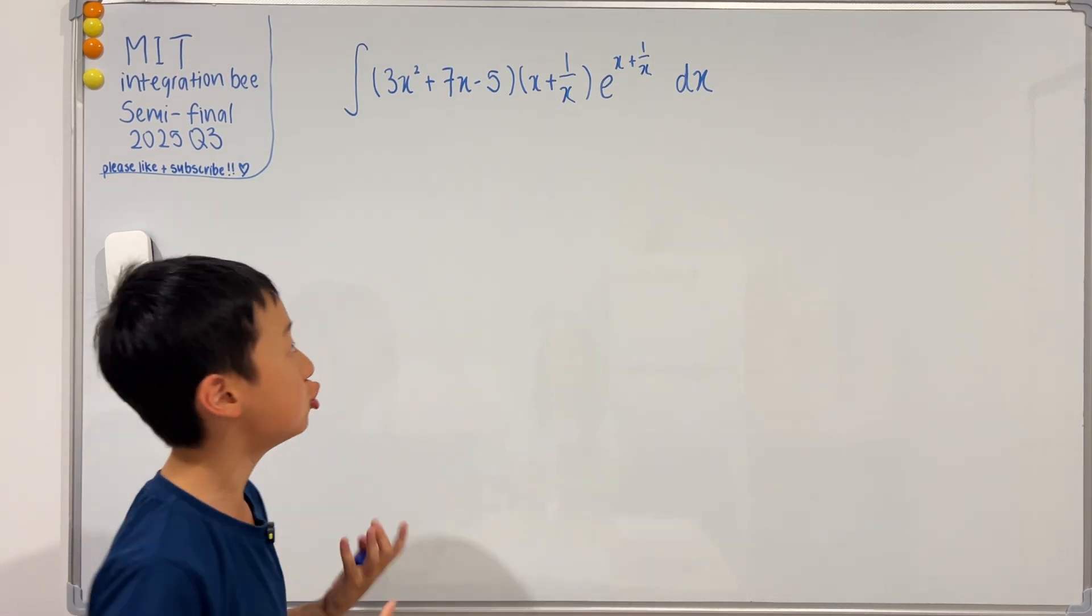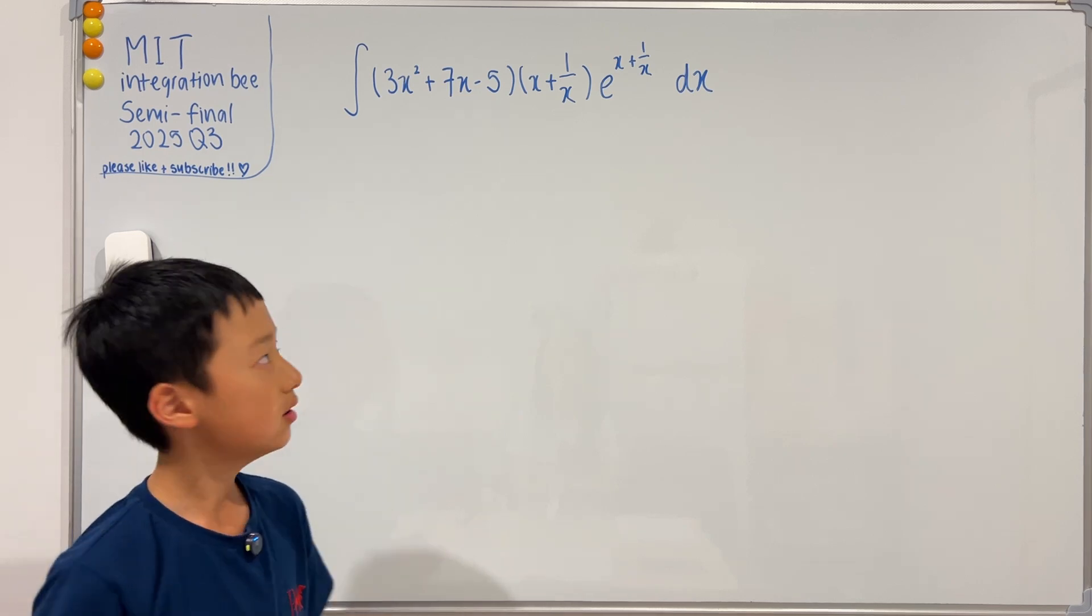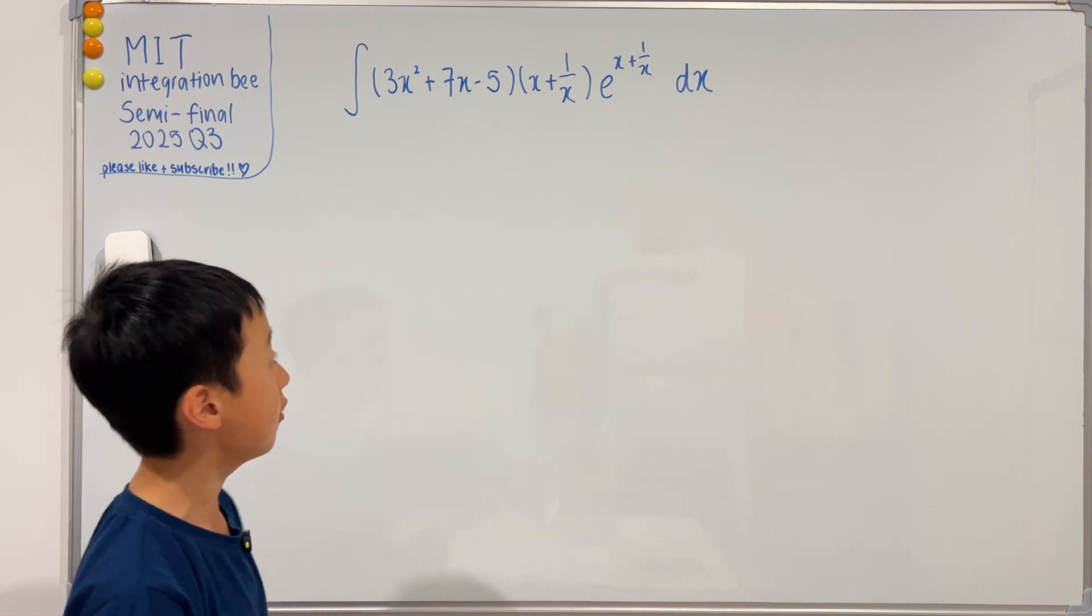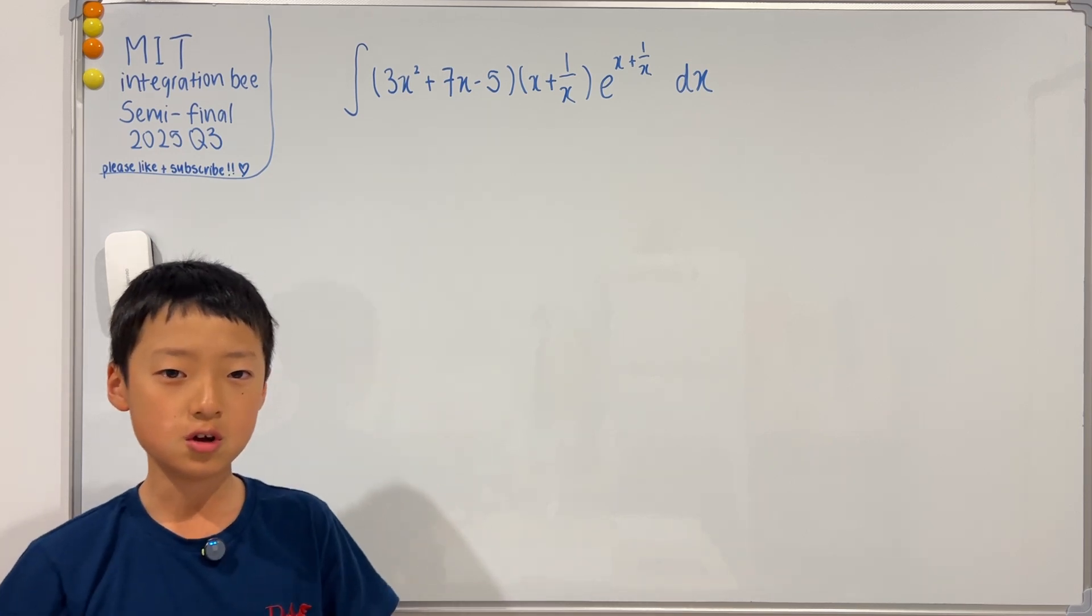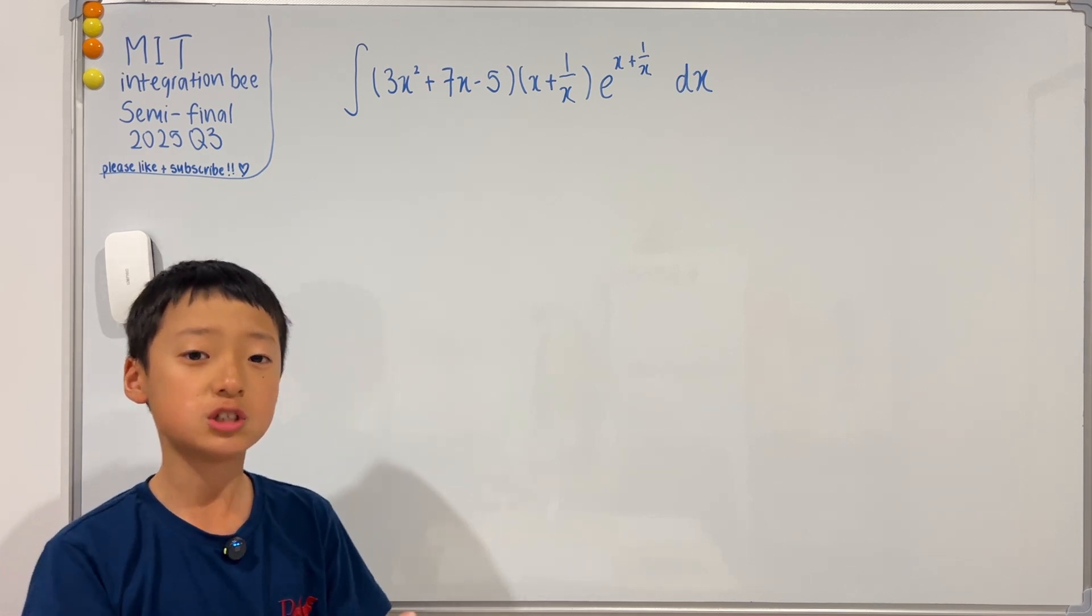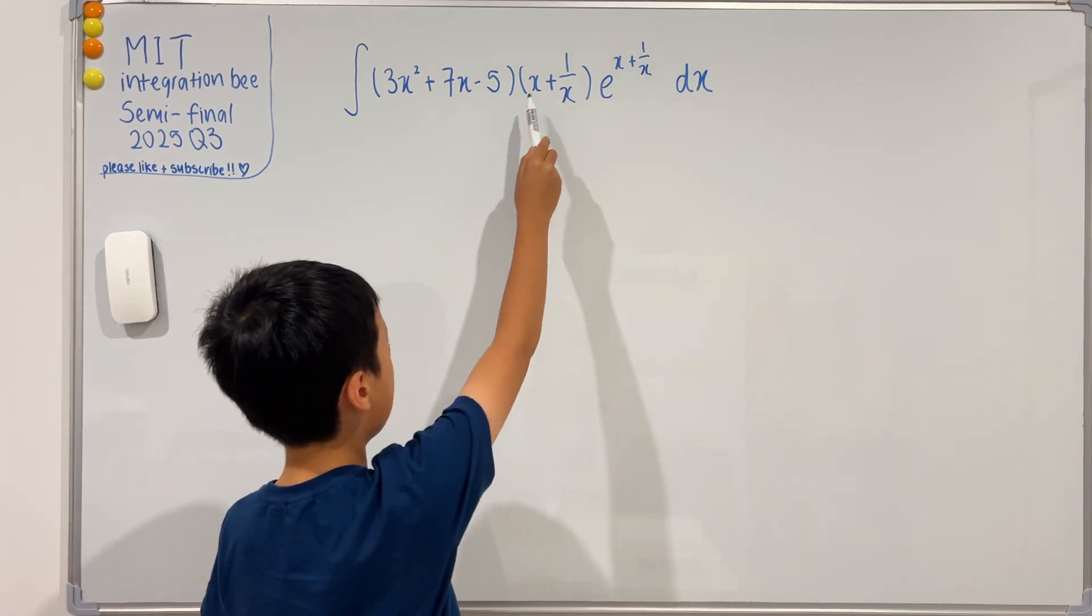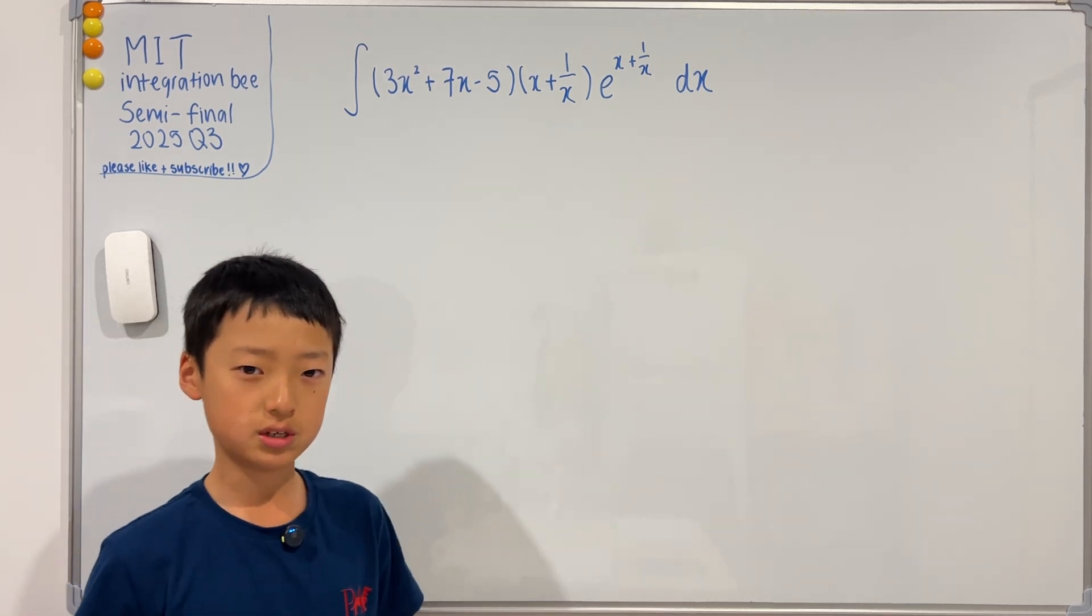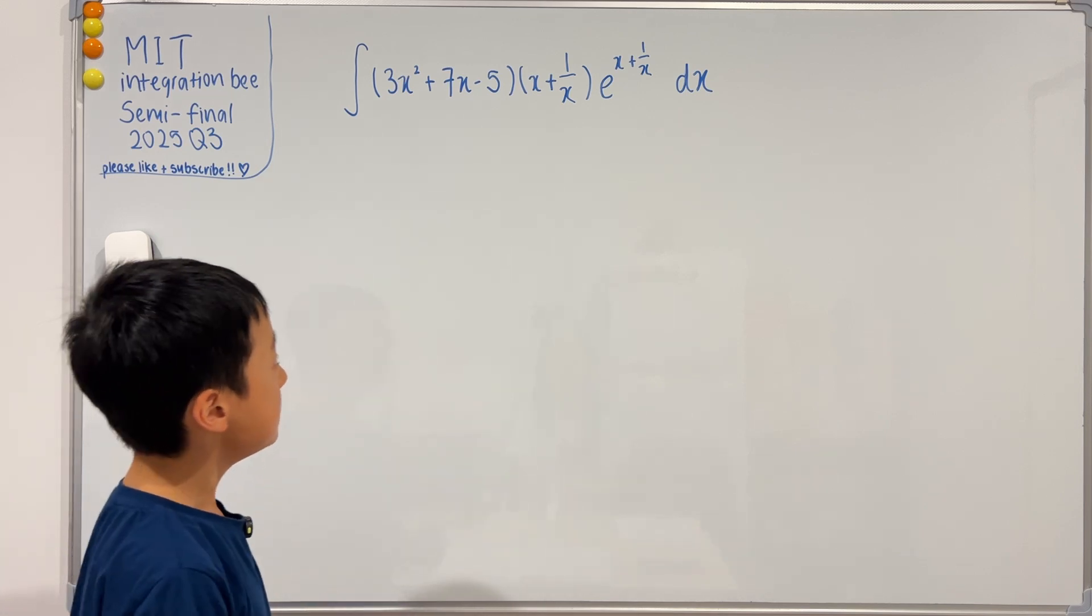But the thing is, if you want to do a u-substitution, for example u equals x plus one over x, then du will be one minus one over x squared, which has nothing to do with x plus one over x. So now we're out of options.